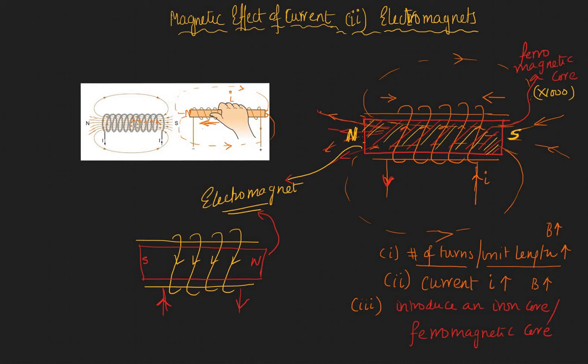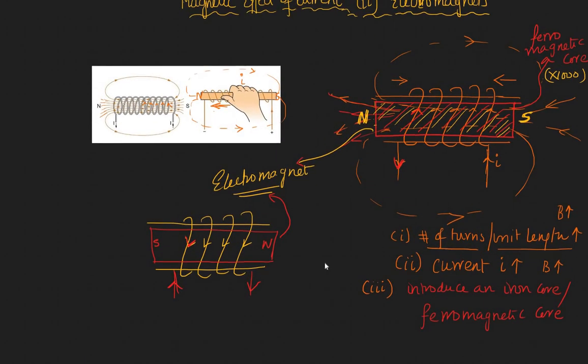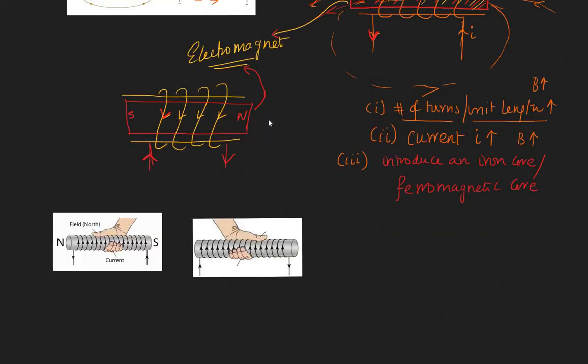Electromagnets are artificial magnets created by putting in an iron core. Here is a picture of a solenoid with a ferromagnetic core. You can find the magnetic field by curling your fingers — if this is your current, this is your B, as we discussed.